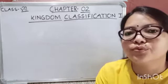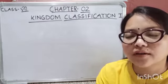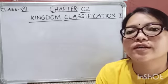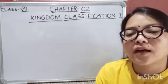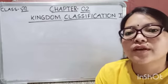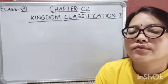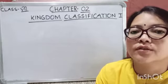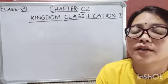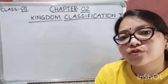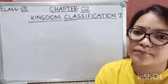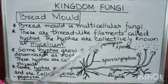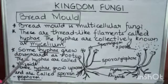Let's continue chapter number two: Kingdom Classification, Part One. Earlier I told you about the characteristic features of Kingdom Protista and Kingdom Fungi. Today you're going to learn about the nutrition and respiration of bread mold, and the characteristic features of Kingdom Plantae and Kingdom Animalia. Let's get started.